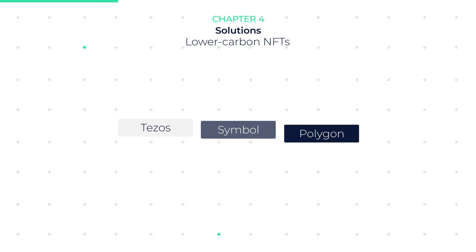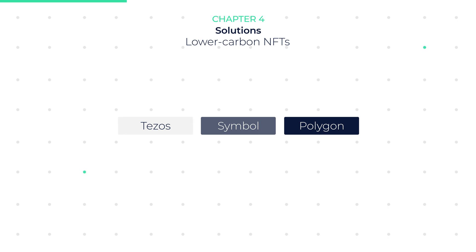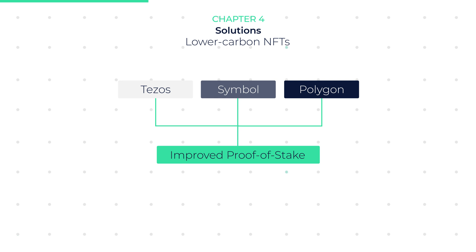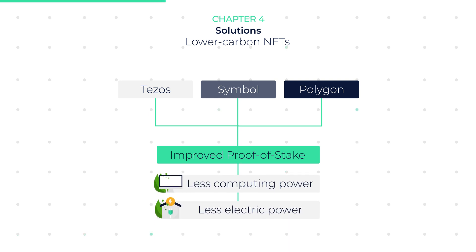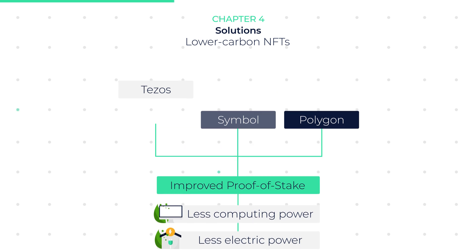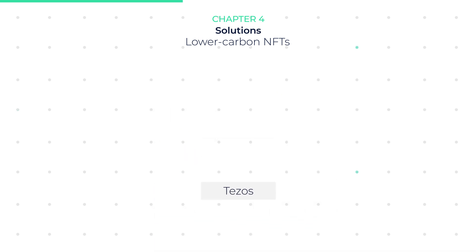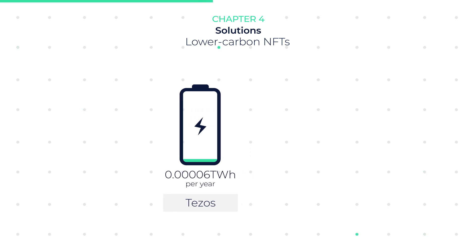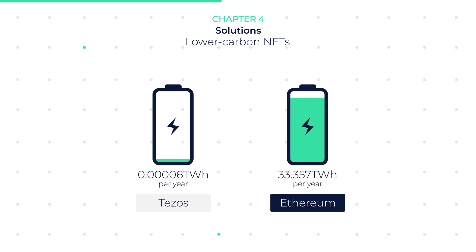Other blockchain variants that offer NFT support, such as Tezos, Symbol, and Polygon, all make use of the improved proof-of-stake mechanism that does not require large amounts of computing power and therefore uses less electricity. Tezos, for example, claims that their blockchain uses only 0.00006 TWh of energy per year, compared to 33.357 TWh for Ethereum.